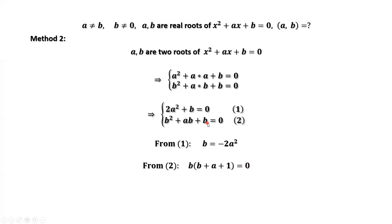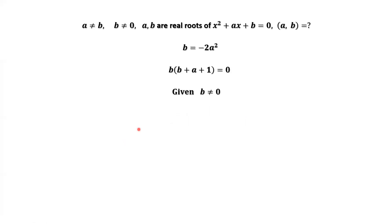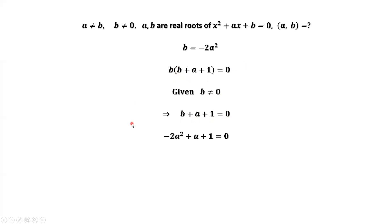Since b is not zero, we divide both sides by b, giving b plus a plus 1 equals zero. Replacing b by negative 2a squared, we have negative 2a squared plus a plus 1 equals zero.